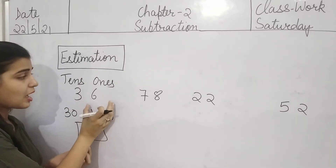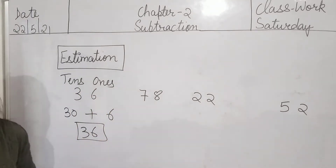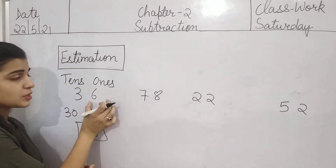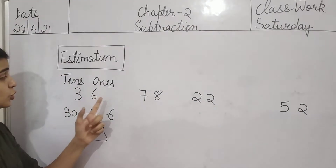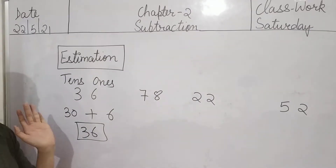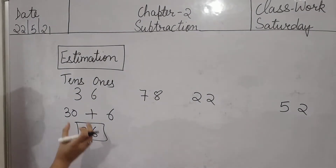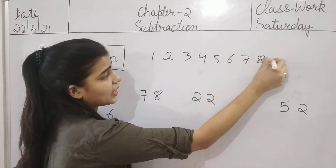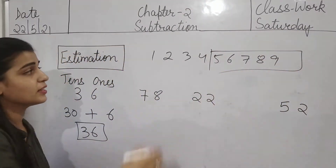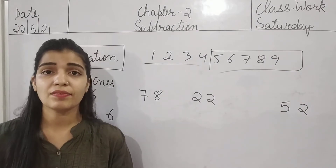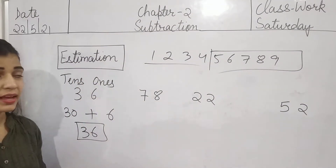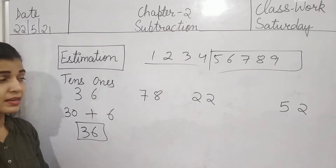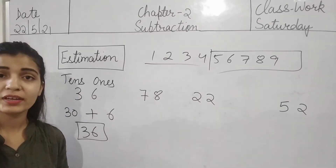Agar aapki ones digit jo hai, wo five ya five se zyada hai — if the ones digit is five or more than five — so students, jo aapki tens wali value hai, usme one add ho jaayega. Dhyan se samjhna. If five or more comes in ones — 5, 6, 7, 8, 9 — toh ones five se zyada hai, so jo three aapka hai usme one add karo. Matlab jo tens hai, uski next value kya hogi? Three se aage kya aata hai? Four. Iska matlab 36 kis ke around hai? 40 ke around hai.